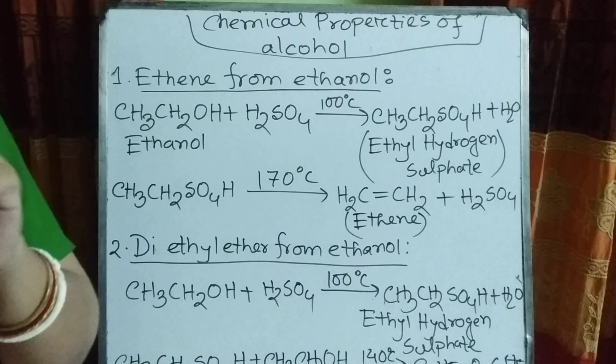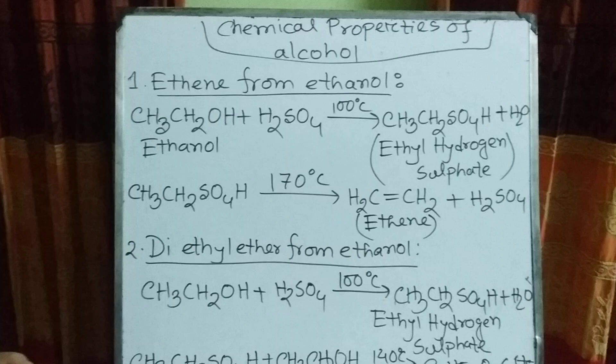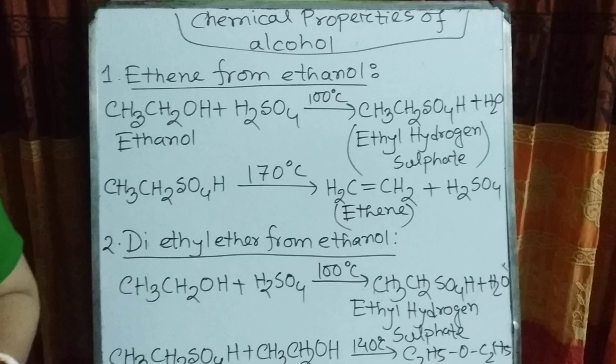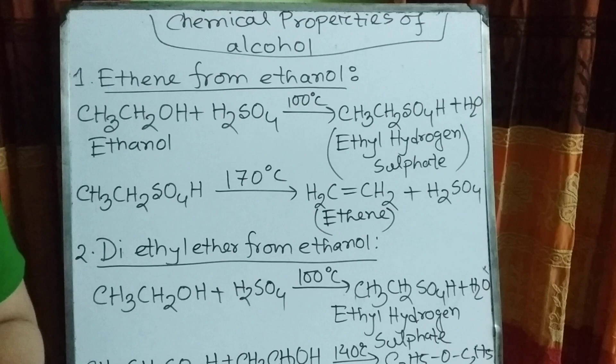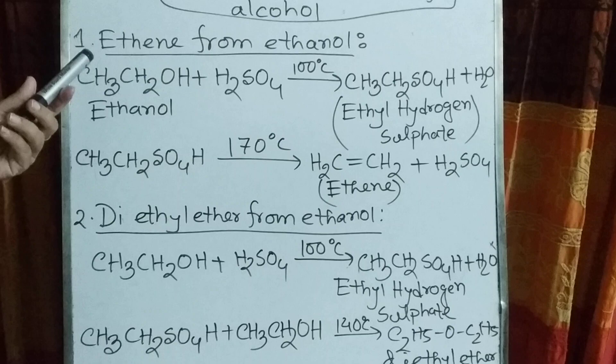Alcohol has an OH group. Because alcohol has a functional group, and the functional group of alcohol is OH. For the presence of this OH group, alcohol is dissolved in water. You must be reminded that alcohol is used as a solvent also. Now, come to the chemical properties of alcohol.